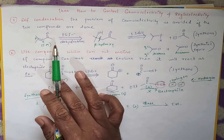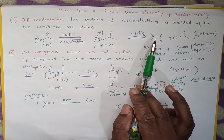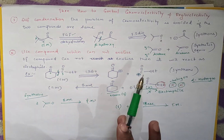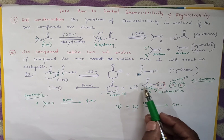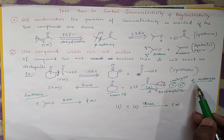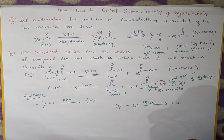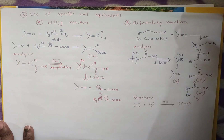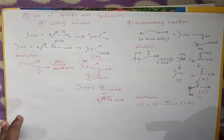These are the two ways how we are going to control the carbonyl condensation. First case: disconnect in such a way that you should get two same reactants. Second case: use a compound which cannot enolize — that means a compound which cannot carry alpha hydrogen atoms. Now, one more very important thing comes: use of specific enol equivalents.